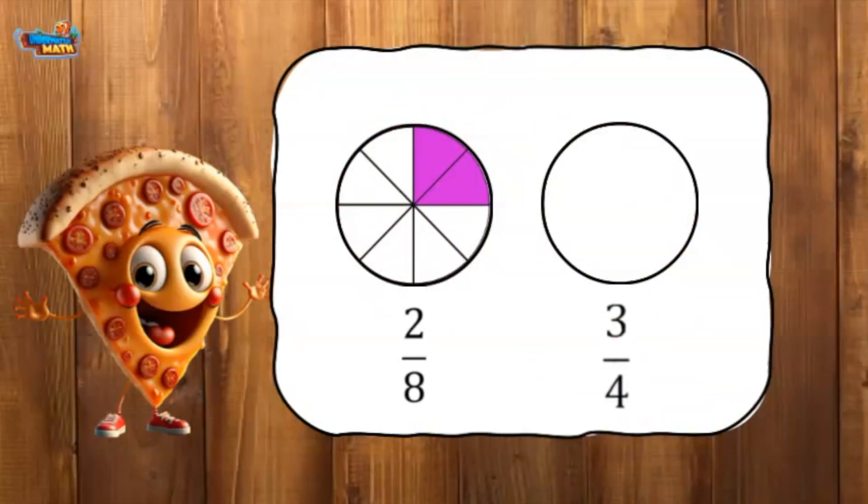For the second fraction, the denominator is four. This means the model will be split into four equal parts. The numerator is three, so three parts out of the four need to be shaded in.